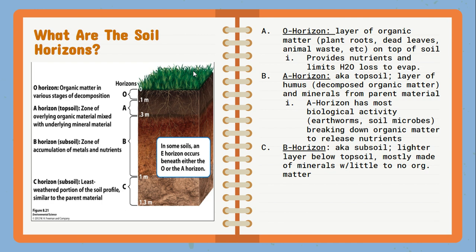Below the A-horizon, we get to the subsoil, known as the B-horizon. It's a lighter layer, mostly made of minerals, with little to no organic material. In some cases — and you can see this in the picture — there can also be an E-horizon, known as the alluviation layer, where we see a lot of accumulation of metals. Depending upon what kind of soil we're looking at, it can occur either beneath the O-horizon or beneath the A-horizon.